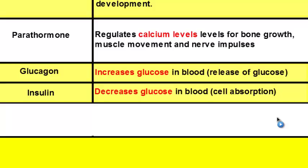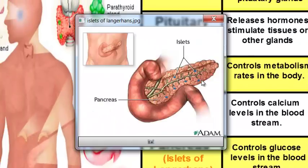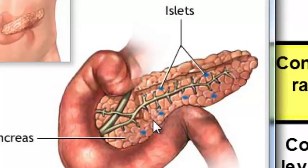If you eat something with a lot of starch — like a box of cookies or a big bowl of pasta — you dump a lot of glucose into your blood and need to get it into your cells. Your pancreas will release the hormone insulin. Inside the pancreas, clusters of cells called the islets of Langerhans are the actual cells that release these hormones — glucagon and insulin.